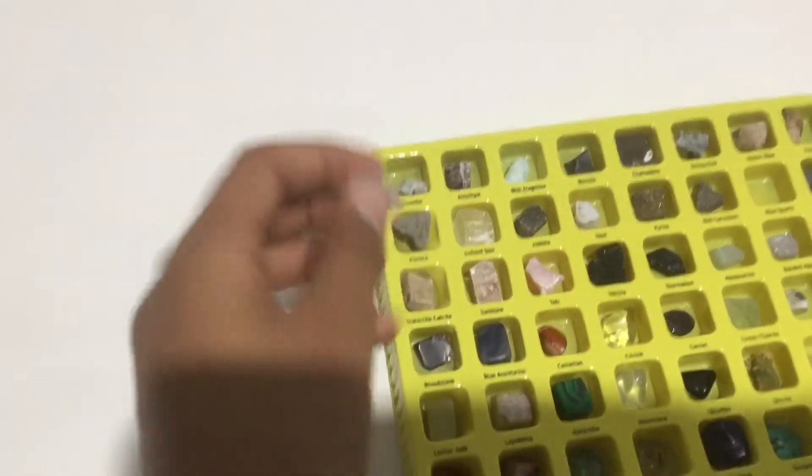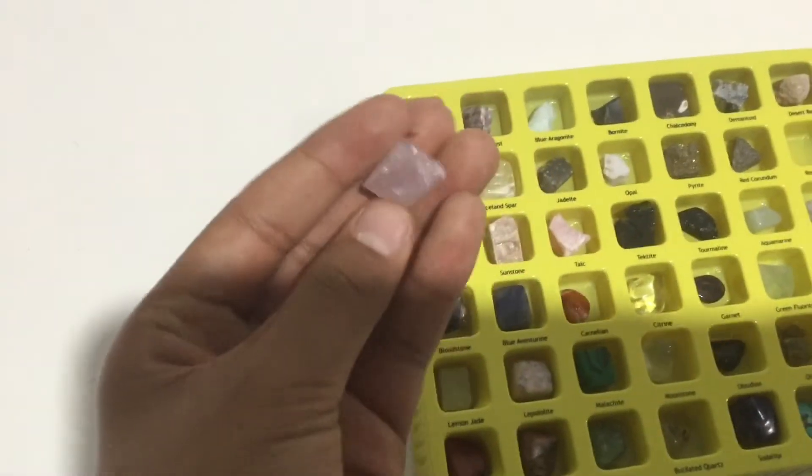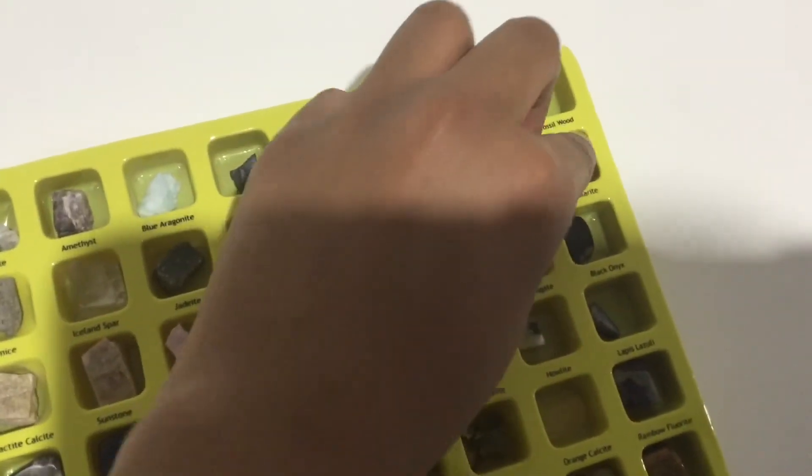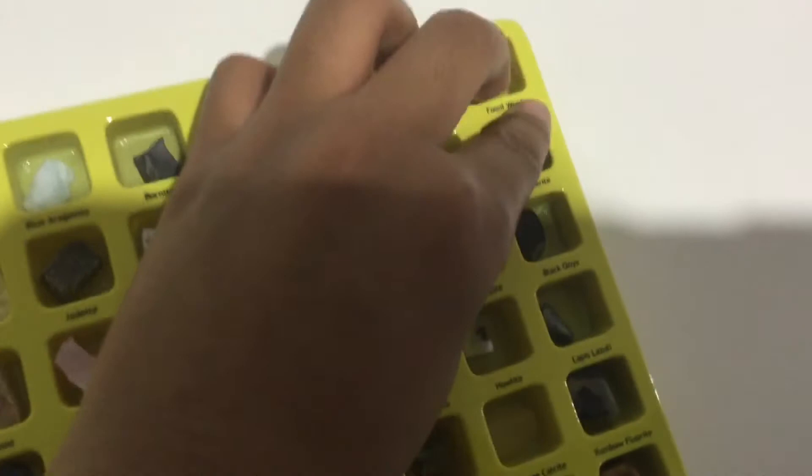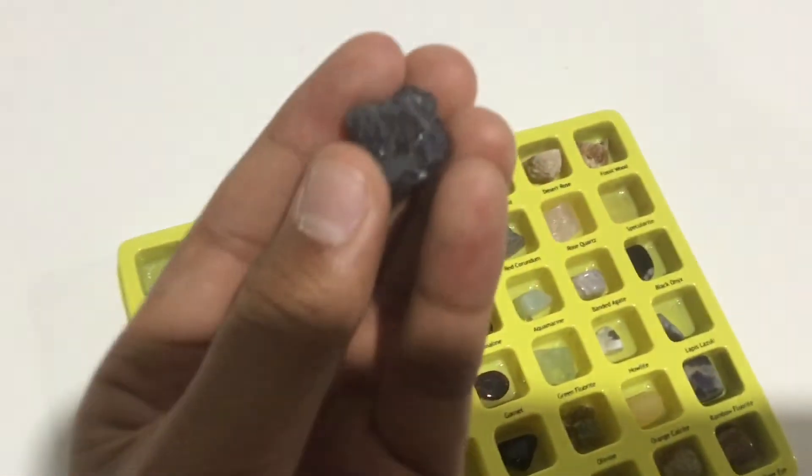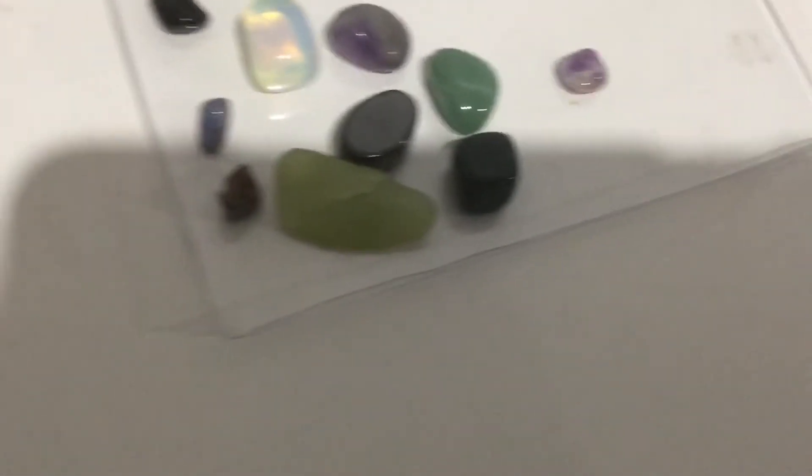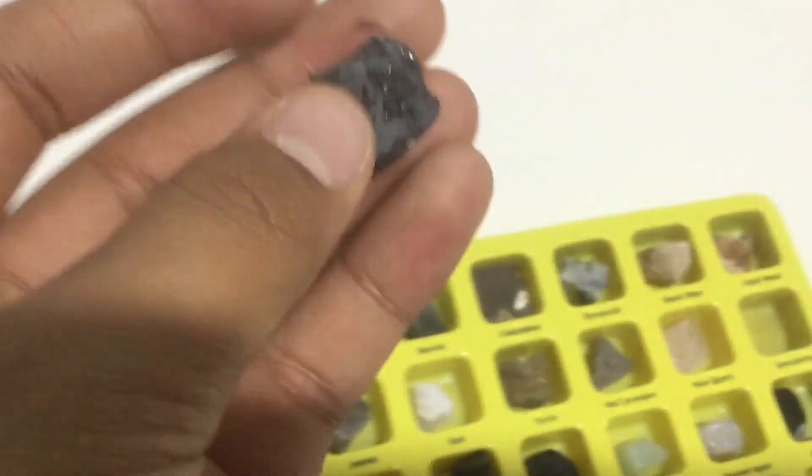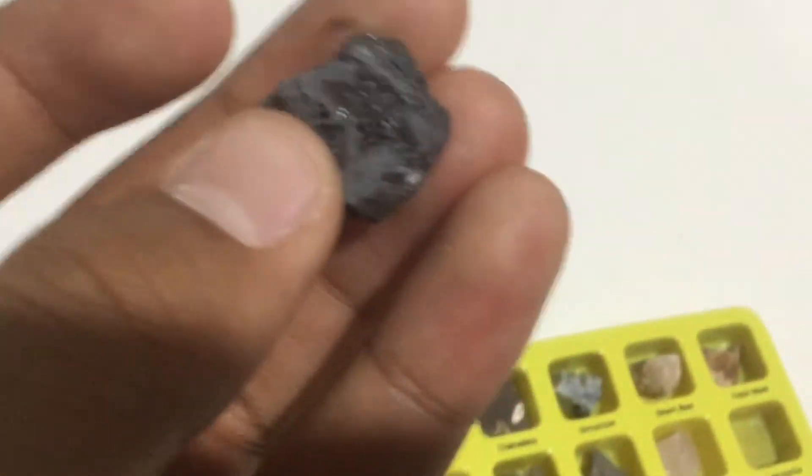This one is specularite. Another fact is it's like the metallic, more metallic version of hematite, like you just saw, which is that one right there, which is still a heavy one. But this one's actually not that heavy though. It has cool things in it.